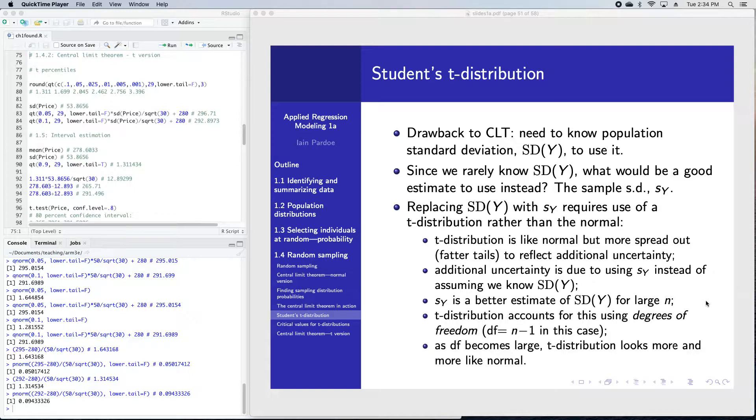The degrees of freedom indexes the t-distribution that you use. As the degrees of freedom becomes larger, and it will become larger for a larger sample size, then the t-distribution ends up looking more and more like a normal distribution. Conversely, when the sample size is very small, you get really fat tails and you have a lot of probability out in the tails.